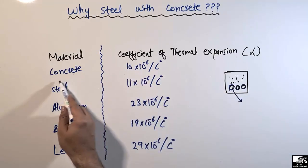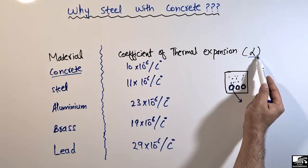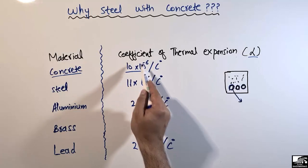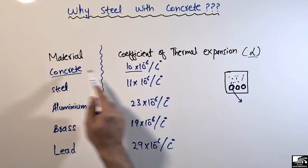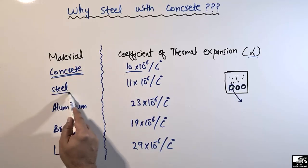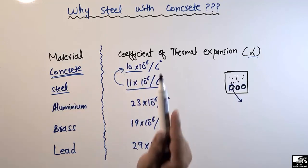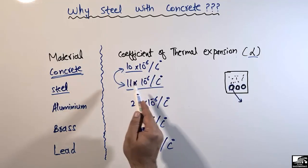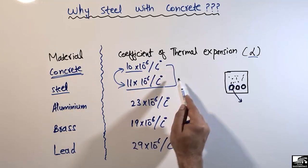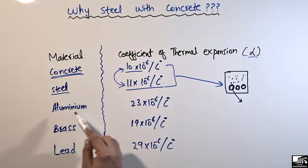For concrete, the coefficient of thermal expansion alpha equals 10 multiplied by 10 to the power minus 6 per degree centigrade. If you look at steel, it also has an almost similar value — 10 to 11 — only one unit difference between their coefficients of thermal expansion. That is why we use steel inside the concrete.